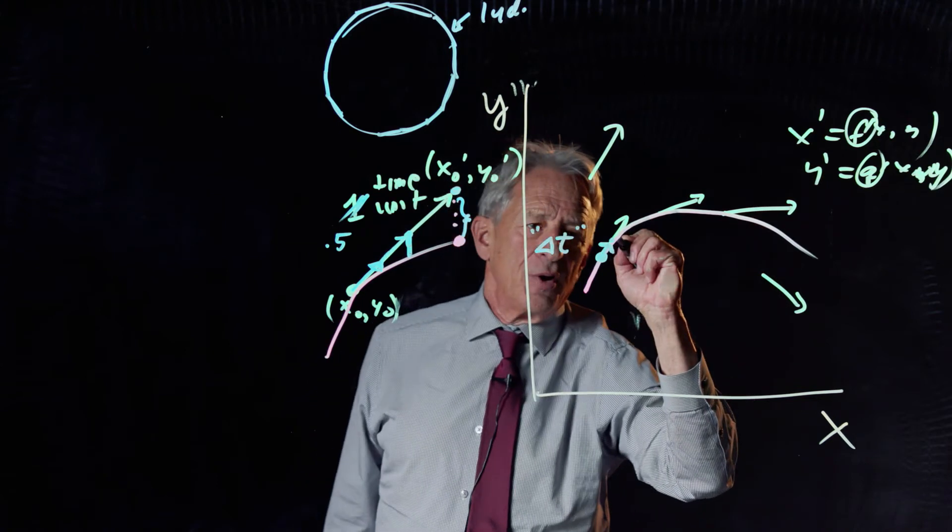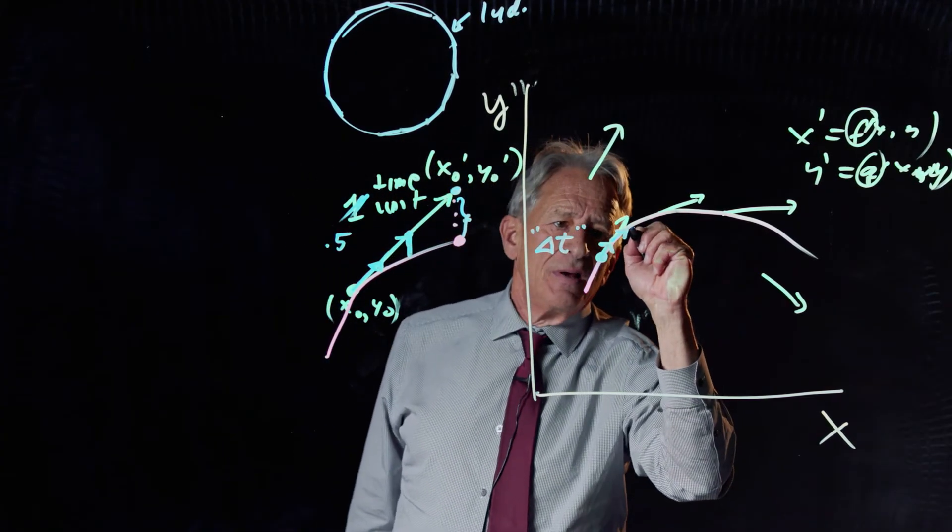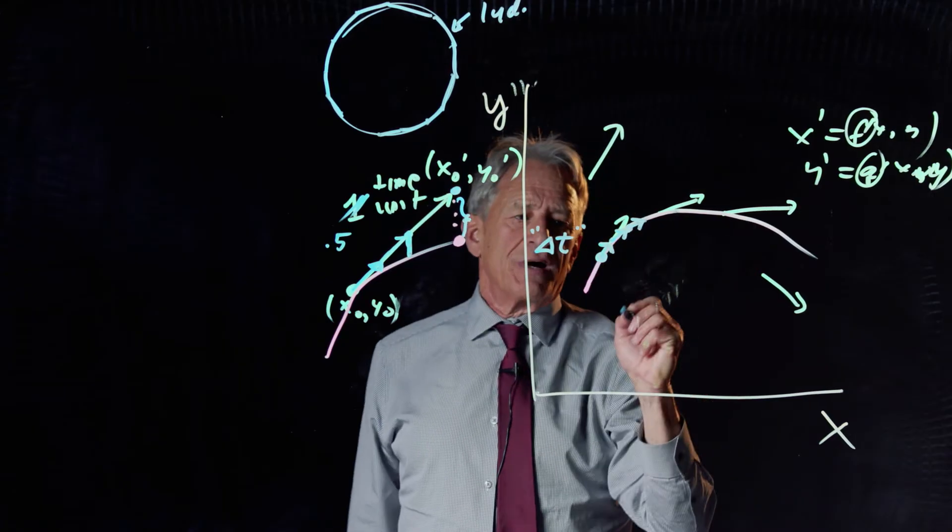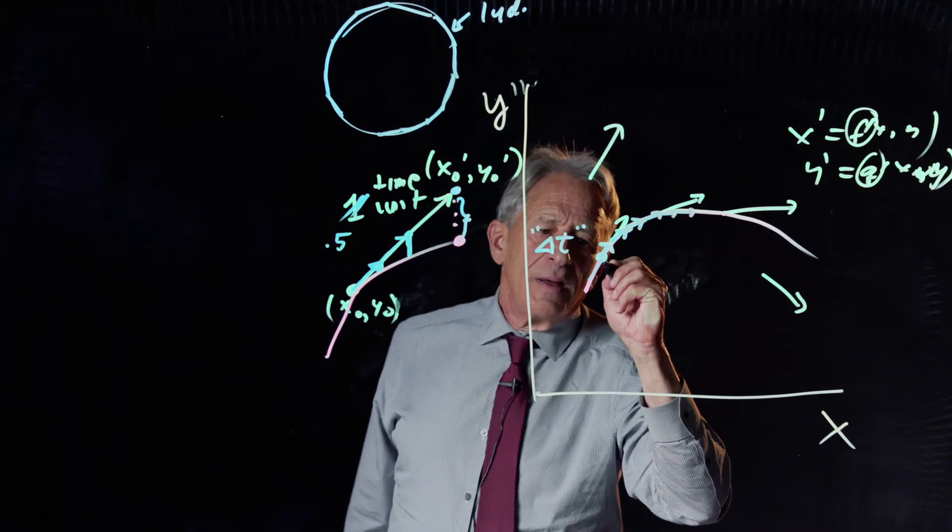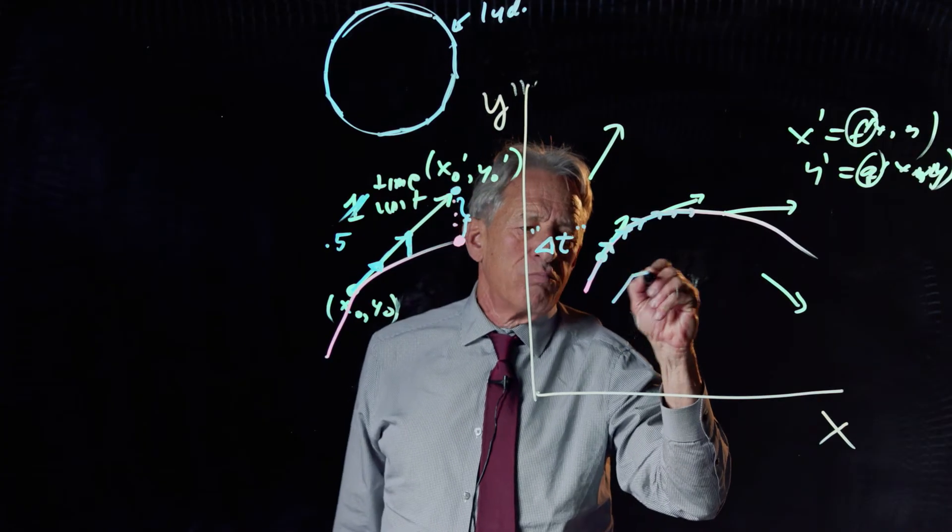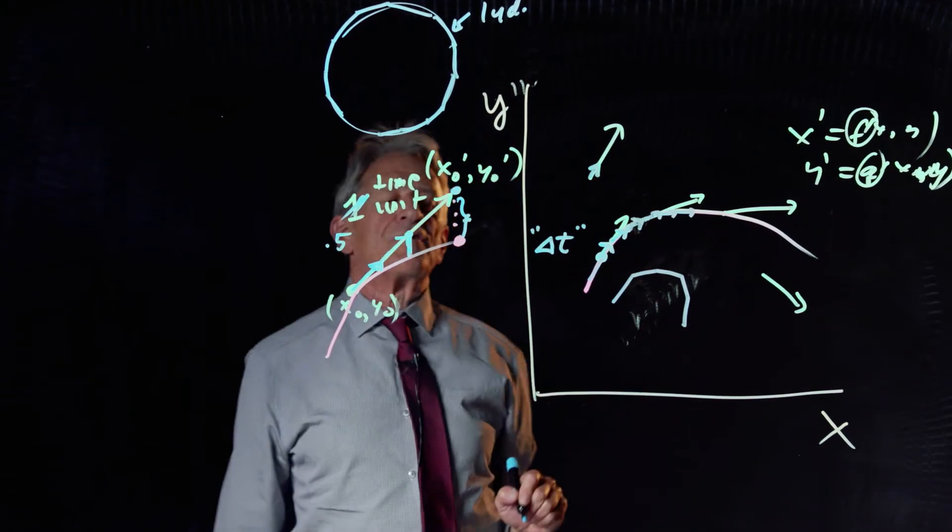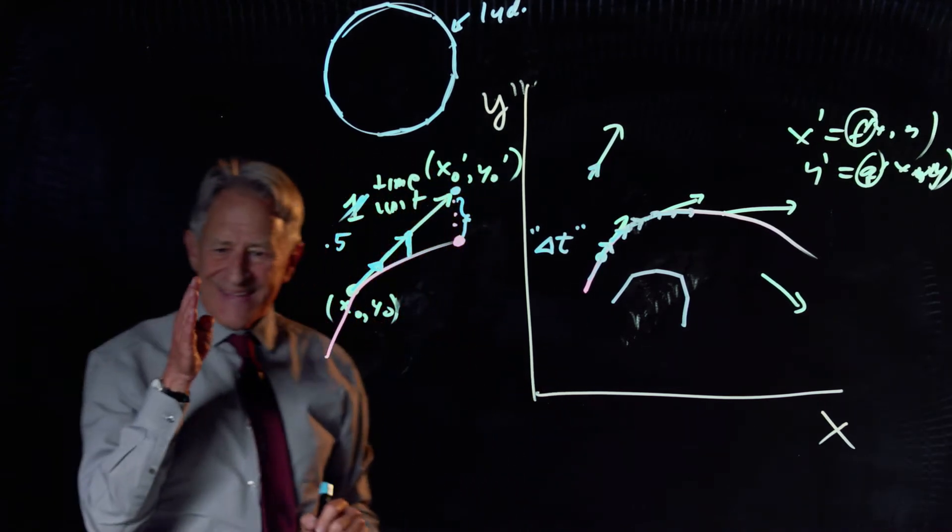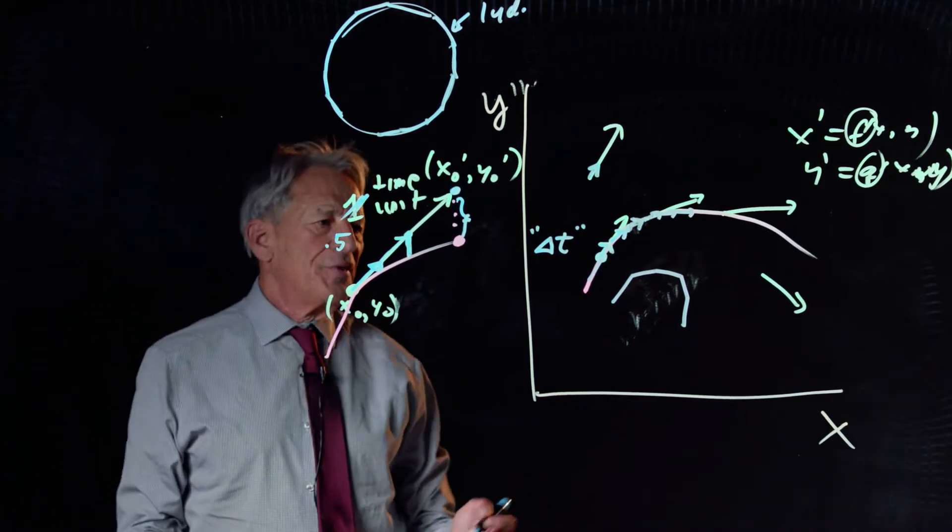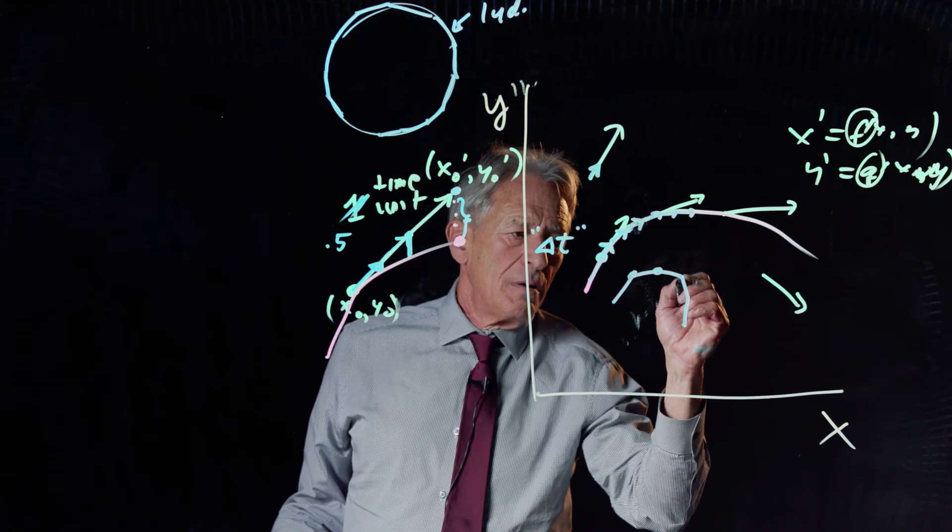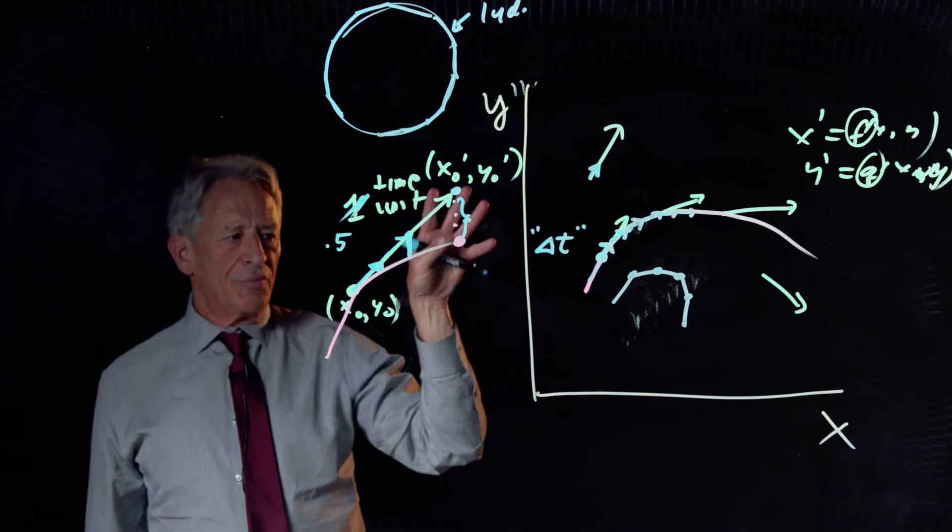We're going to follow that change arrow for a very short time. That's going to take us to a new point. At the new point, we're going to have a new x prime and a new y prime, and we're going to follow that change arrow for a very short time, the same delta t. We're going to take us to a new point. We're going to find the change arrow at that point. We're going to keep finding these little change arrows and following them for very short amounts of time, and that is going to produce a blue broken line consisting of straight lines, each of which is the change vector followed for a very short period of time.